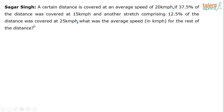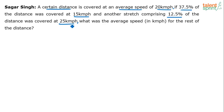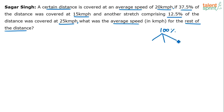So this is an interesting question on the concept of average speed. A certain distance was covered at an average speed of 20 kilometers per hour. However, 37.5% of this distance was covered at 15 kmph, another stretch comprising 12.5% was covered at 25 kilometers per hour. The total distance is 100%, split into three parts: 37.5% distance, 12.5% distance, and the remaining 50% distance.